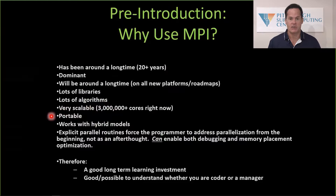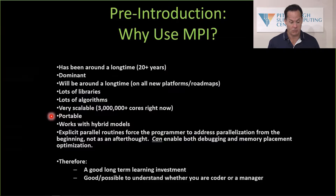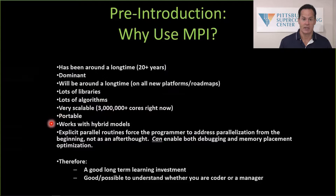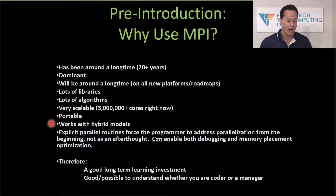MPI is very portable. Everything we'll do in this workshop you can take and run on your laptop without changing a character. MPI is a good example of a standard that's well enough written that corner cases and exceptions don't have to be made. It works with hybrid models — mixing and matching with OpenMP or GPU programming. All the standards committees that want to do parallel computing recognize they have to be interoperable with MPI, and it does work out well.